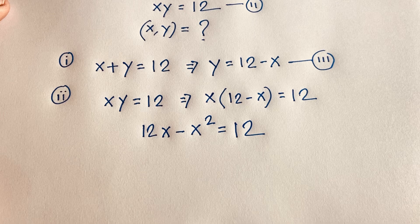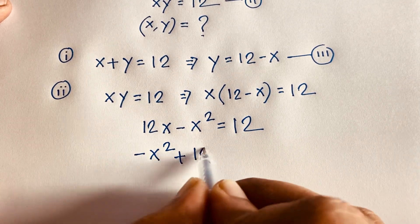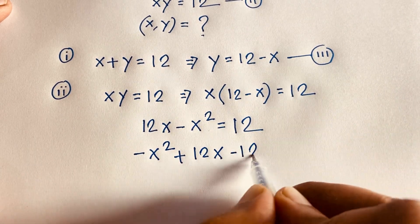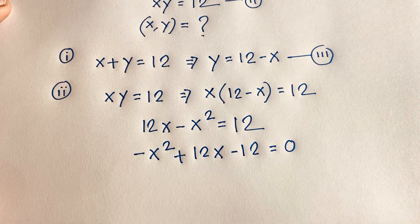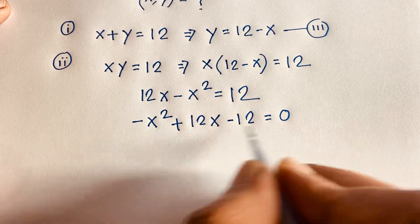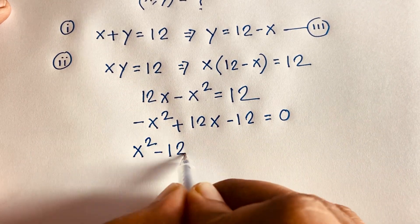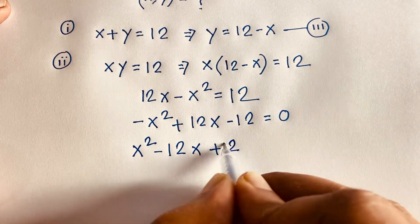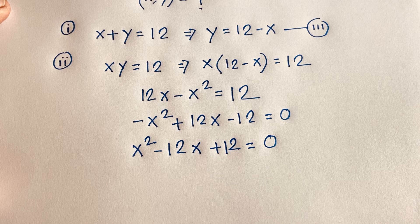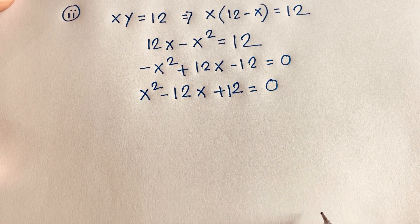We have negative x squared and positive 12x. If I move the positive 12 to this side, it becomes negative 12, equal to 0. Multiplying both sides by negative 1, we get x squared minus 12x plus 12 is equal to 0. So we have found the quadratic equation: x squared minus 12x plus 12 equals 0.